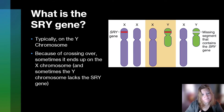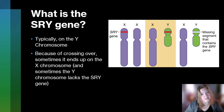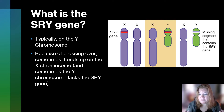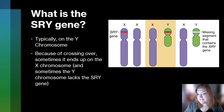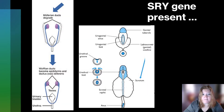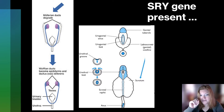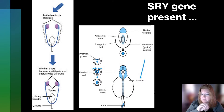So what is the SRY gene? It's typically on the Y chromosome, but because of crossing over, it's not always. Sometimes it ends up on the X chromosome. Sometimes you end up with a Y chromosome without it. This fact contributes to the inability to so quickly define sex as XX and XY. Because when the SRY gene is present, this happens — it doesn't matter if that SRY gene was on a Y chromosome or an X chromosome.